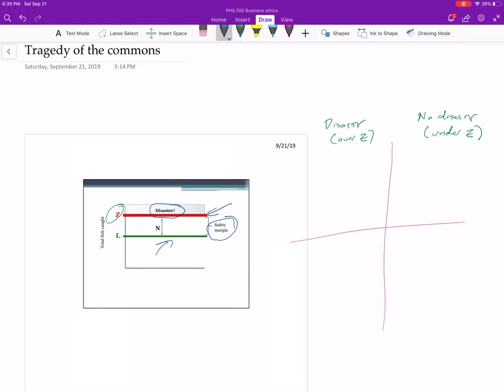Just to make this easier, let's assume that fish costs, or we can sell for 100 bucks. And if there's a disaster, the loss for each of us is going to be minus a million dollars. That just makes it easier for us to compare things.